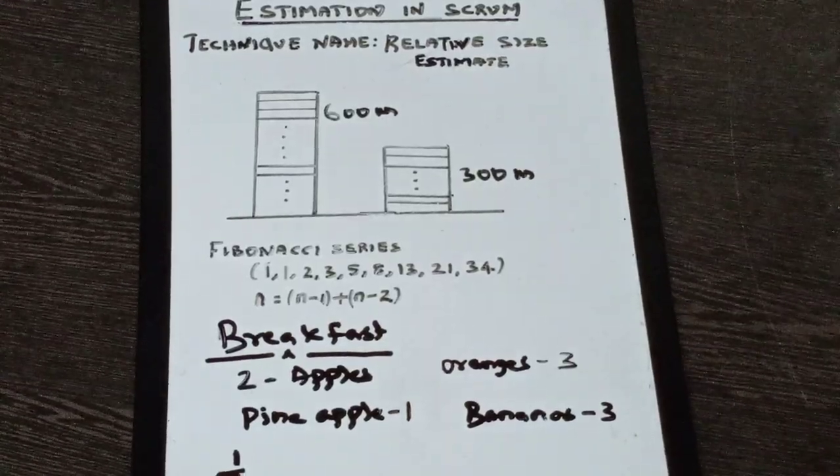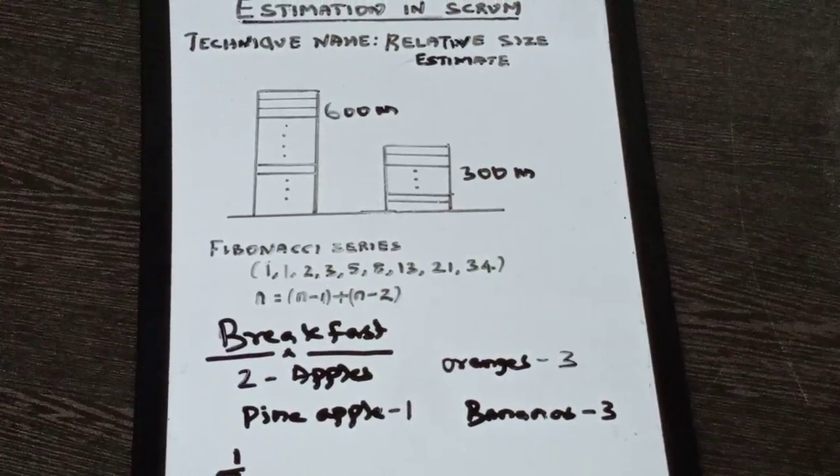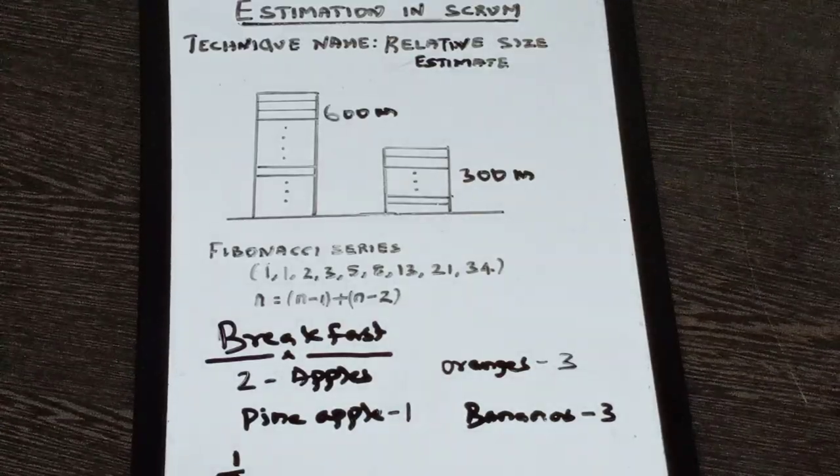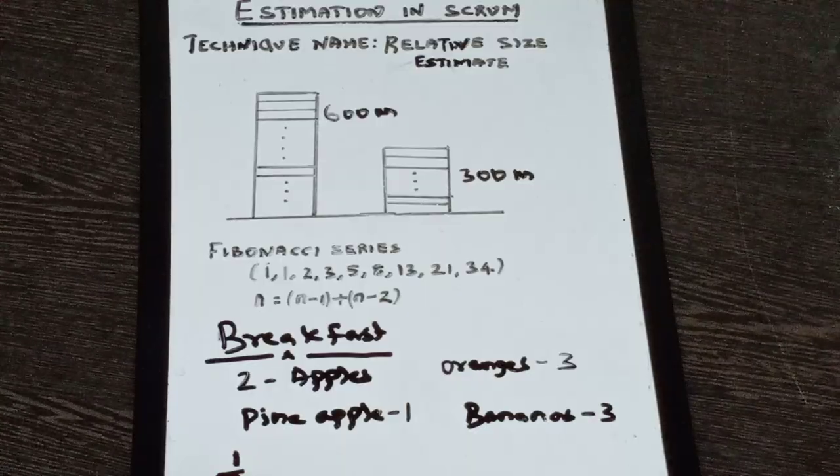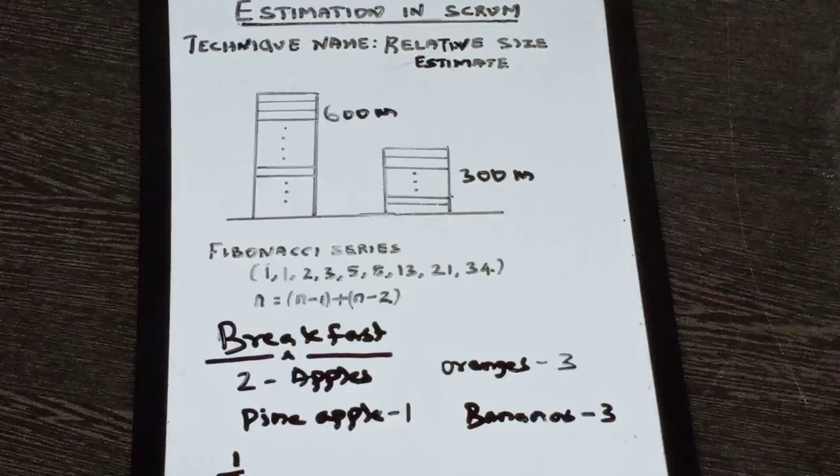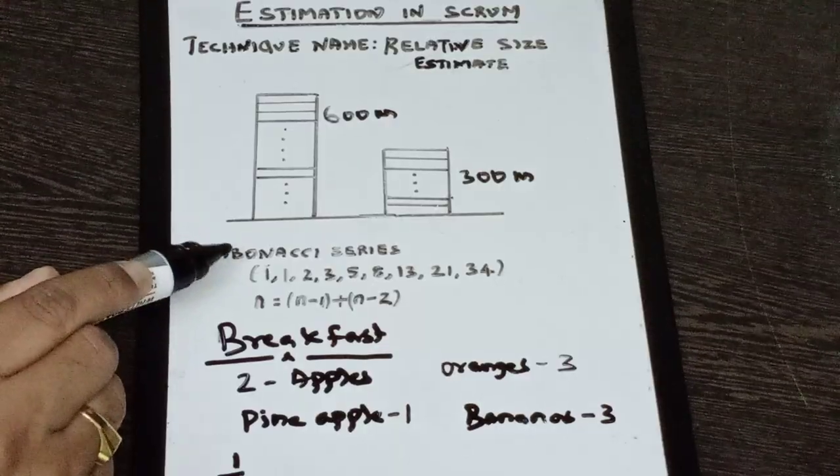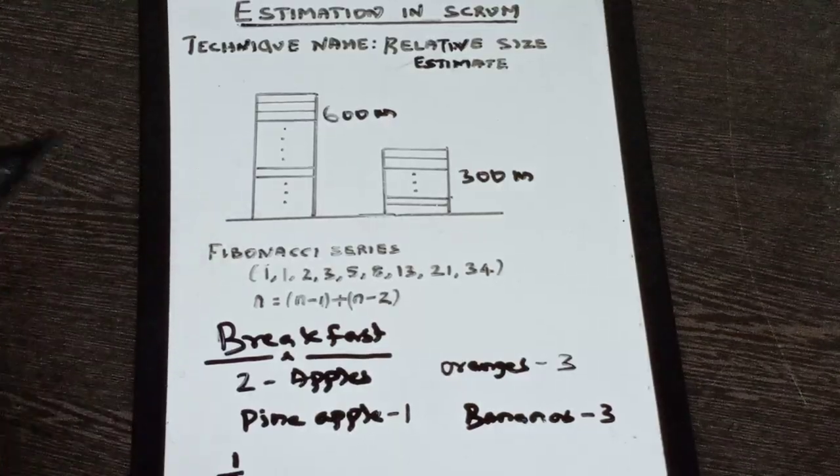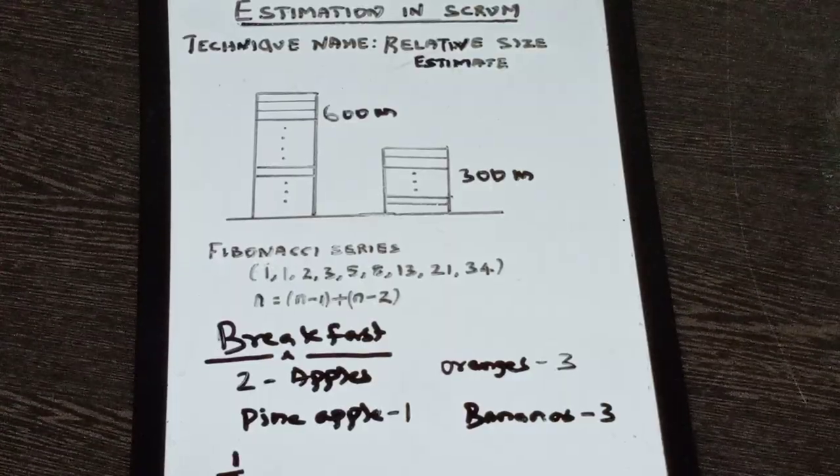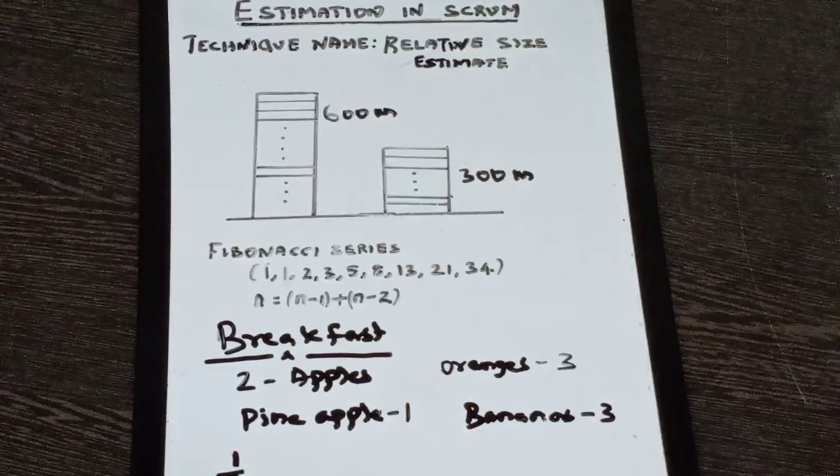And continue this process until there is a convergence. And at the end of this, you will know each user story will have a point. And that point uses a Fibonacci number. And remember, this story point is a unitless measure. It doesn't talk about any time or any days. It is basically a unitless measure. When you add all the story points, you will end up with the total size of the project. So with that, I am ending this session.